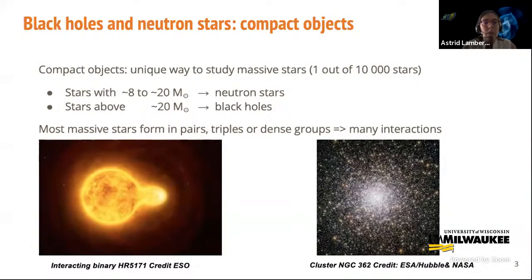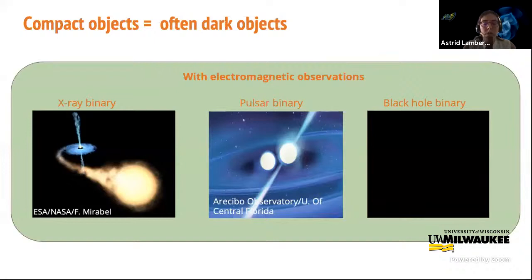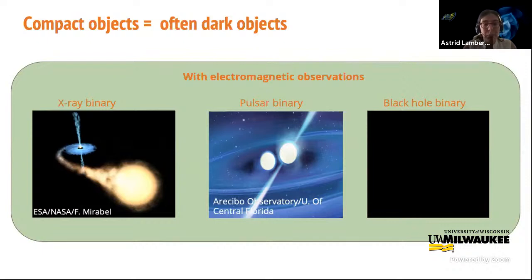Compact objects are intrinsically very faint and hard, or even impossible, to observe with regular electromagnetic telescopes. A single isolated black hole doesn't emit any light and is essentially invisible. The same is true for binary black holes. However, we can find traces of stellar black holes when they are in a binary with a companion star. In X-ray binaries, accretion onto the black hole gives rise to jets and disks, which we can observe with electromagnetic telescopes to infer properties of the black hole.